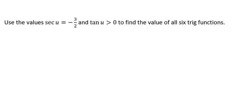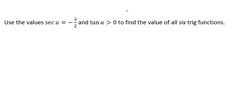Based on the information that we have — that secant of u equals negative 3 halves and tangent of u is greater than 0 — that tells us that we're going to be in the third quadrant, because secant is negative and tangent is positive. The only place tangent can be positive is in the first and third quadrant, but in the first quadrant everything is positive, so the fact that secant is negative tells us we're in the third quadrant.